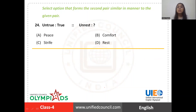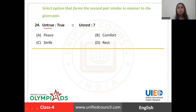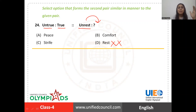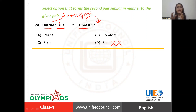Question number 24, and it's slightly tricky. You have to select the option that forms a second pair similar in manner to the given pair. The given pair is 'untrue' and 'true'. If untrue is to true, then unrest is to what? Some of you may go with 'rest' because it aligns with the given pair — untrue/true and unrest/rest. But rest is not the right answer. Unrest and rest don't actually look like antonyms, and they are not antonyms.